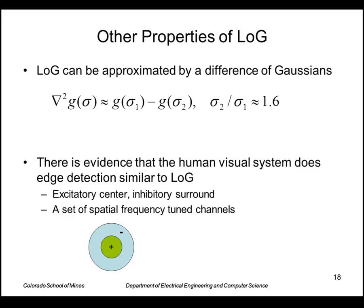Some other nice properties of Laplacian of a Gaussian: we can approximate it by a difference of Gaussian. If we just take a Gaussian of size sigma one, subtract a Gaussian of size sigma two, where the ratio is about 1.6, that's a very good approximation to LoG.